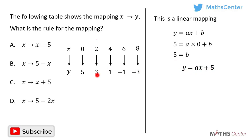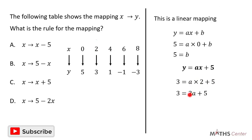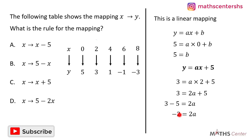I'll choose the next set of values: x is equal to 2 and y is equal to 3. Substituting into the equation gives us 3 is equal to a times 2 plus 5. A times 2 gives us 2a, so we have 3 is equal to 2a plus 5. Grouping terms: 3 minus 5 is equal to 2a, giving us negative 2 is equal to 2a.